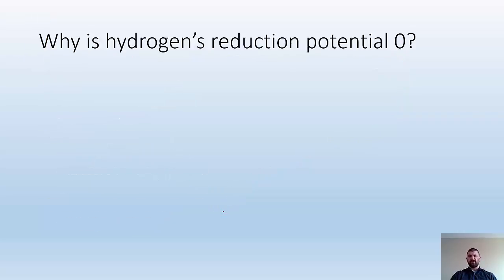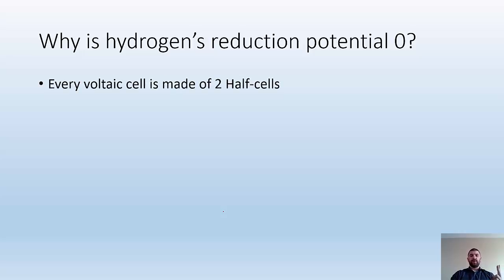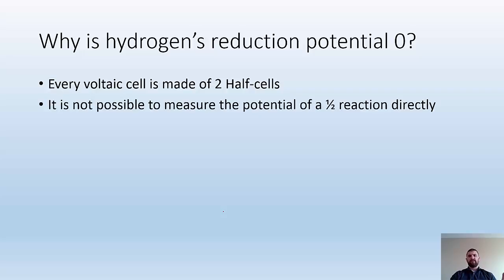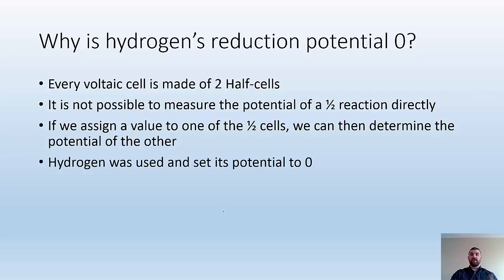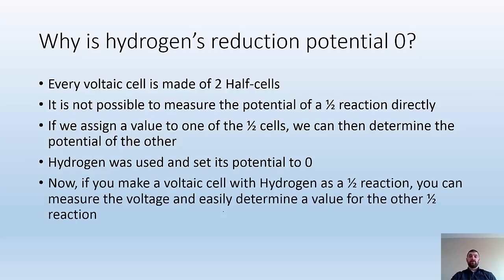Why is hydrogen's reduction potential zero? Every voltaic cell is made of two half cells, and it's impossible to measure the potential of just one half directly. So we have to arbitrarily pick something to be our zero. We assign a value to one half cell and determine the other from there. We said hydrogen is zero, and we compare everything to it. So if I make a voltaic cell with hydrogen as a half reaction, I can measure the voltage and easily determine the value for the other half reaction, because we know hydrogen's is zero.